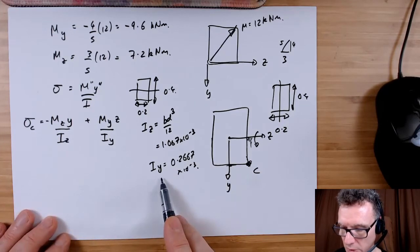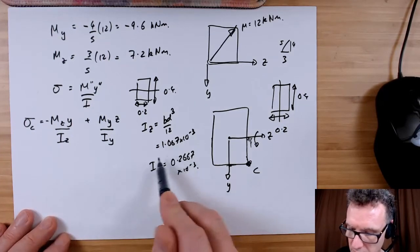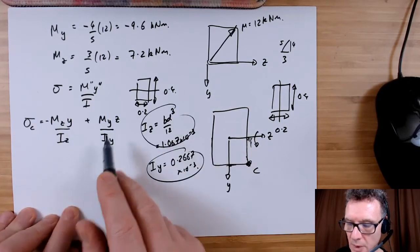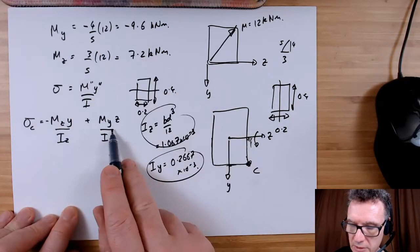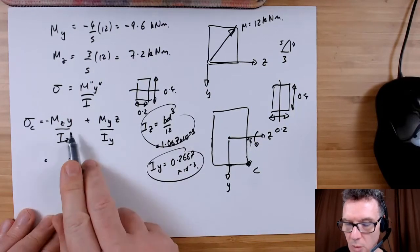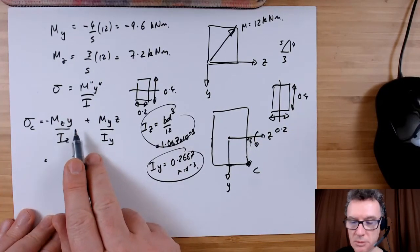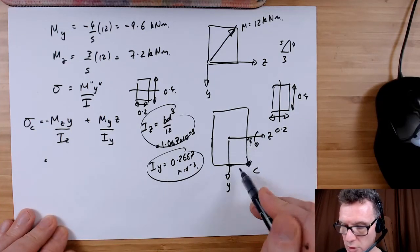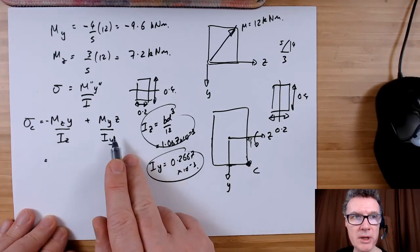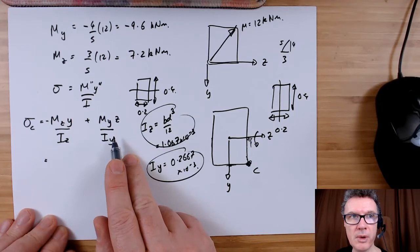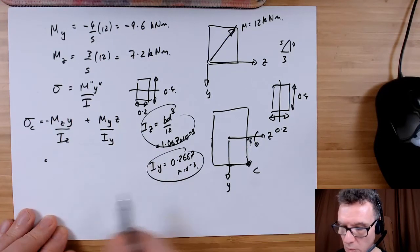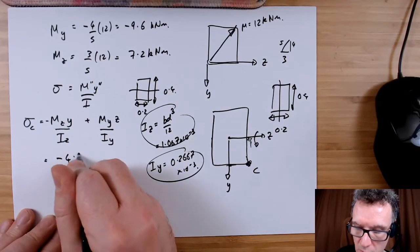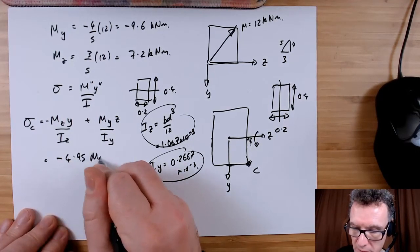Put this number in and this number in. Make sure that this is negative. Your Y value that you need to put in is going to be 0.2, your Z value is going to be 0.1, and you end up with a stress of minus 4.95 megapascals.